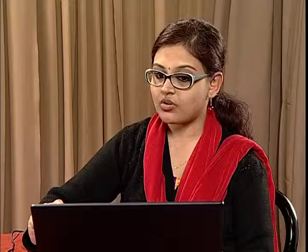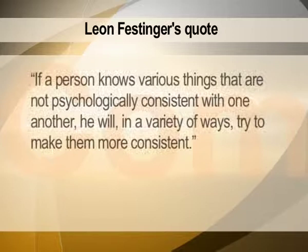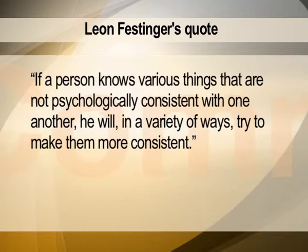As I said, in order to understand these processes, we have to understand Leon Festinger's formulation about cognitive dissonance. When Leon Festinger tried to explain his theory of cognitive dissonance, he gave certain examples. As we can see in his quote, which is very important: 'If a person knows various things that are not psychologically consistent with one another, he will in a variety of ways try to make them more consistent' — for his ease of understanding. So he will try to make it consistent.